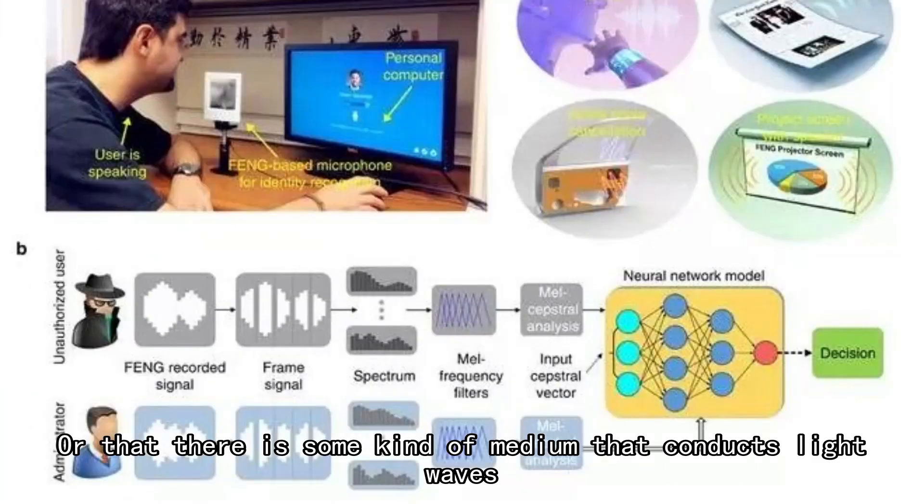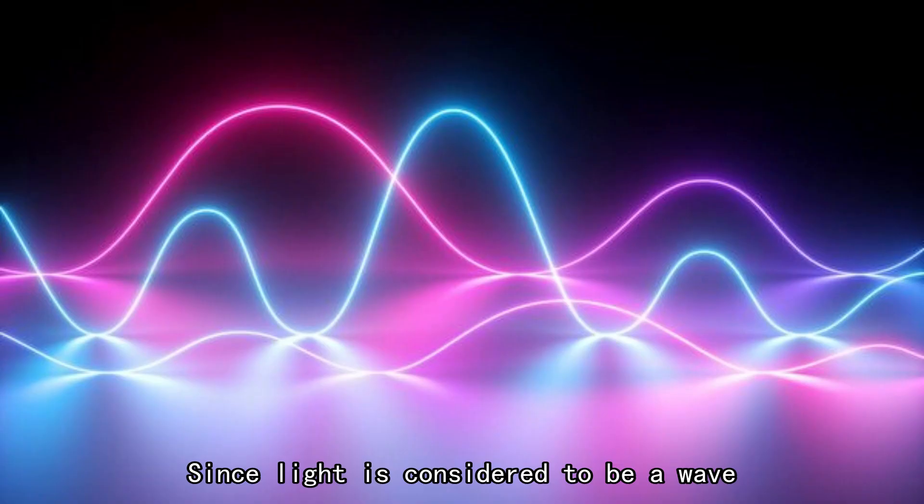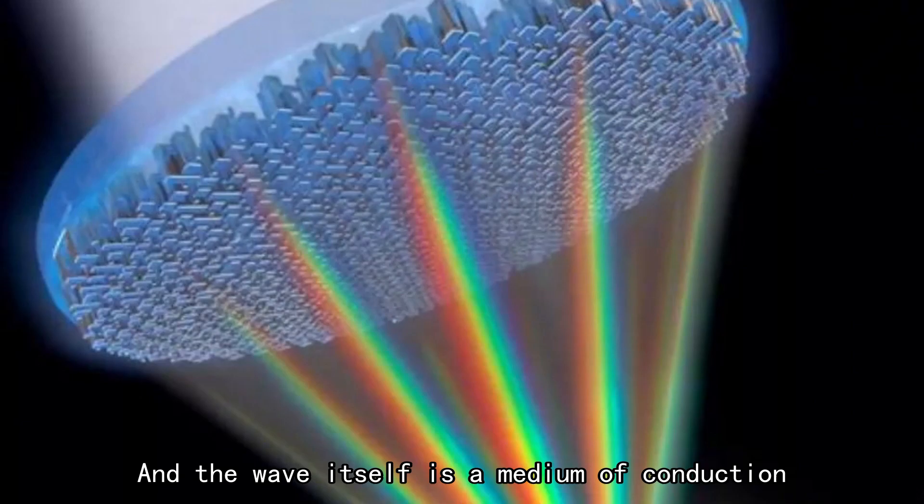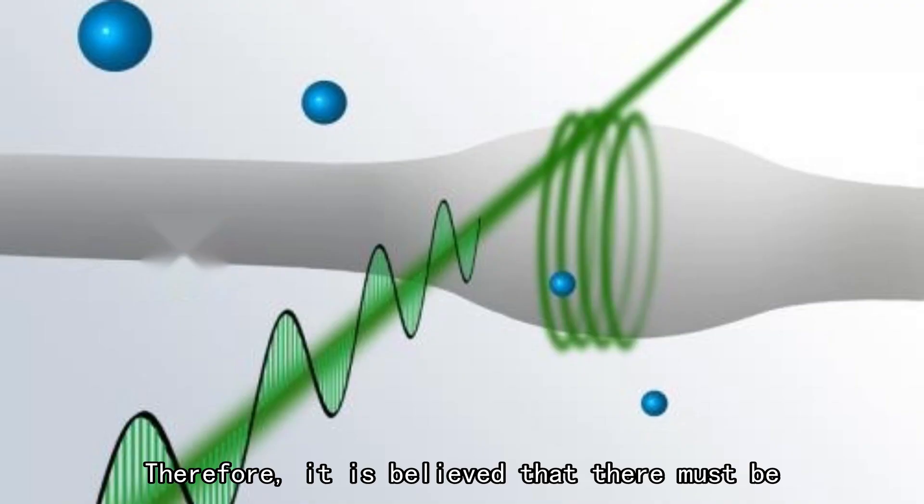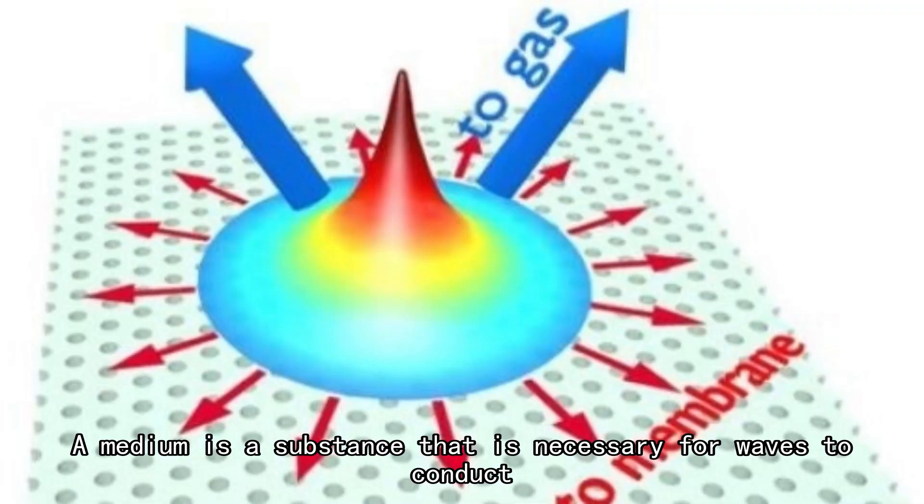Or that there is some kind of medium that conducts light waves, since light is considered to be a wave, and the wave itself requires a medium of conduction. Therefore, it is believed that there must be another medium that conducts light waves. A medium is a substance that is necessary for waves to conduct.